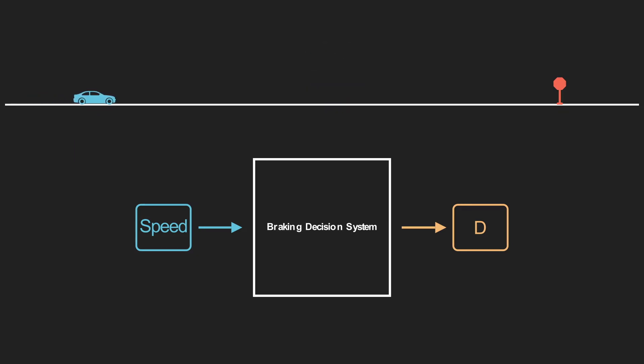For example, if the car detects the stop sign when it's going 12 meters per second, it would input that number into the braking decision system, and the system would output a braking distance, in this case 36 meters. If we were going slightly faster, say 15 meters per second, we would expect the system to output a larger braking distance since it will take the car longer to come to a full stop. Once the car reaches this distance, it will begin braking and hopefully come to a safe stop before the stop sign.